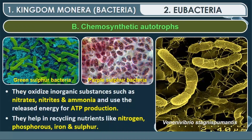The second type of Eubacteria is chemosynthetic autotrophs. They use inorganic chemicals as a source of energy for the synthesis of food. They oxidize inorganic substances such as nitrates, nitrites and ammonia, and use the released energy for ATP production. They help in recycling nutrients like nitrogen, phosphorus, iron and sulfur. Examples include green sulfur bacteria, purple sulfur bacteria, and nitrogen-reducing bacteria.